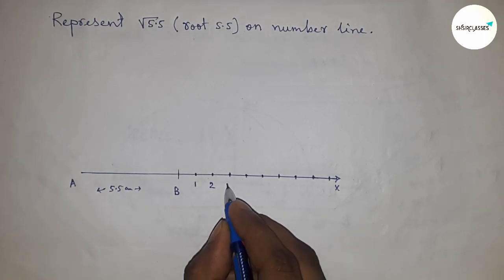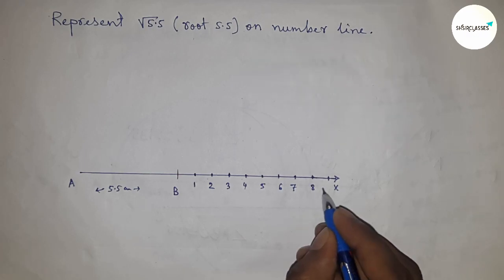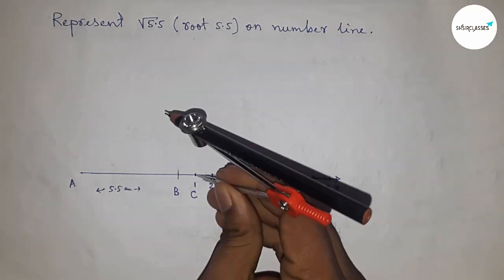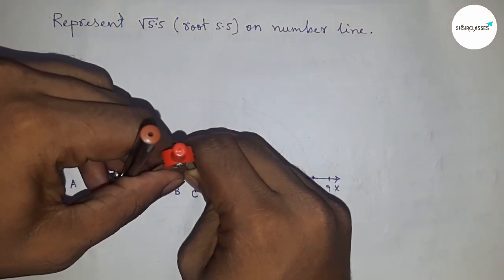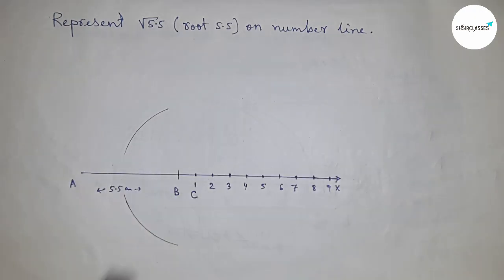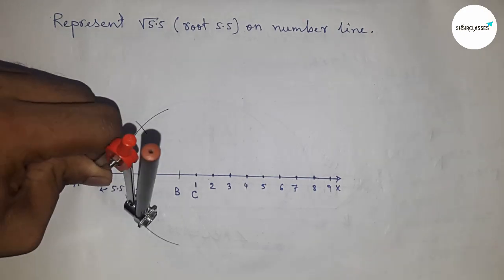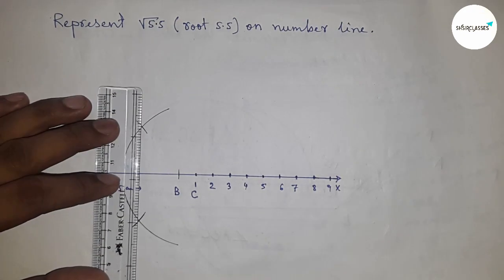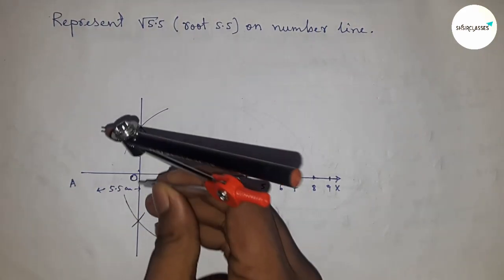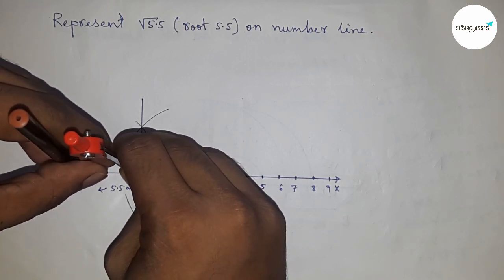Next, from B to X, marking the numbers on the line. This gives us one, two, three, four, five, six, seven, eight, nine. The next marked point is C. Now bisecting the line AC: taking greater than half of AC and drawing an arc to bisect line AC.